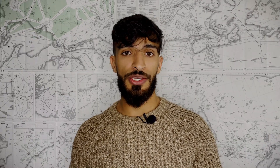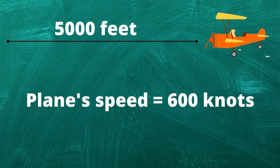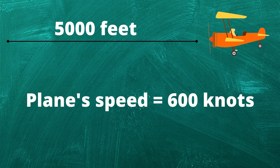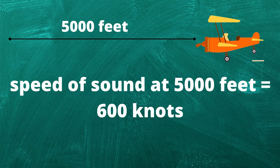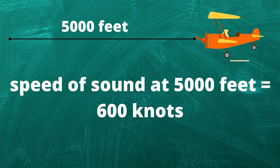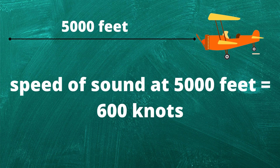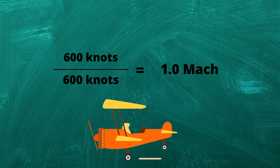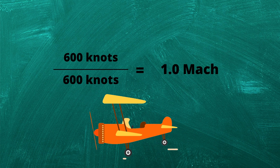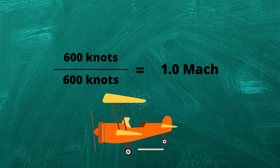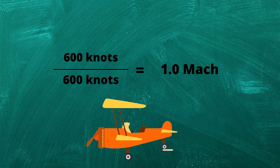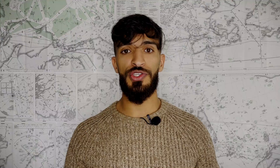Now, if your speed is 600 knots and the speed of sound is also 600 knots, you divide 600 by 600, which gives you Mach 1. That means you're traveling at the speed of sound. That's easy.